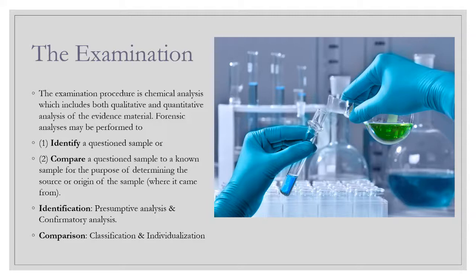Identification means we have to determine what a substance is. The presumptive test includes color tests and microcrystalline tests, while the confirmatory test includes instrumental methods of analysis. For an unknown powder, we need to determine whether it is a talcum powder or a narcotic drug. If it is a narcotic drug, we perform certain color tests. Color tests work based on the functional groups or specific chemical compounds present in the unknown powder, allowing us to identify the chemical composition.